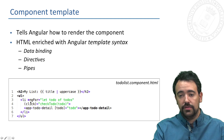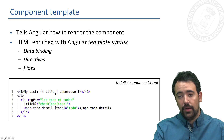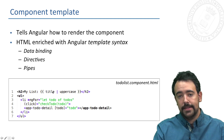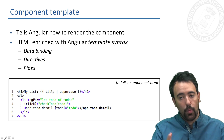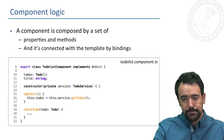We can see also directives, for instance this ngFor directive, and we can see also data binding — for instance here we are rendering the value of the title property that we defined in the logic. But don't worry because we will see this in detail later.